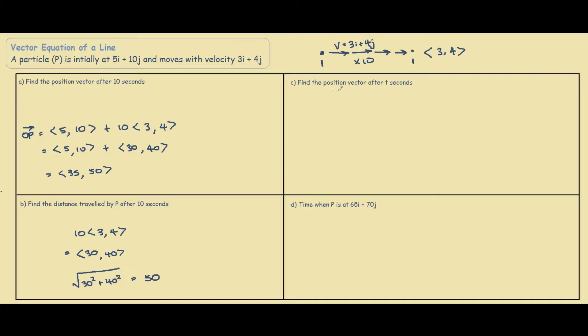For question C, we want to find the position vector after t seconds, so we want to find a general formula. So for OP, we have 5, 10, that's where it begins, then plus some time t of our velocity vector 3, 4.